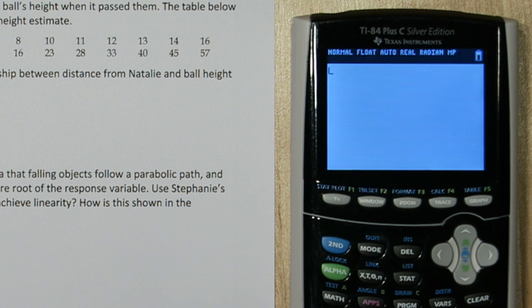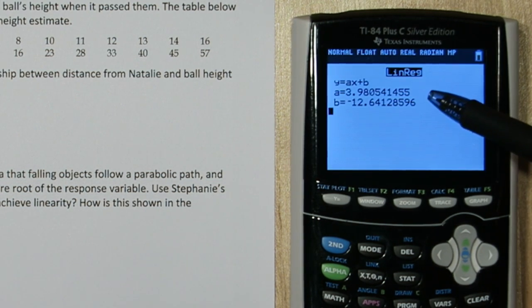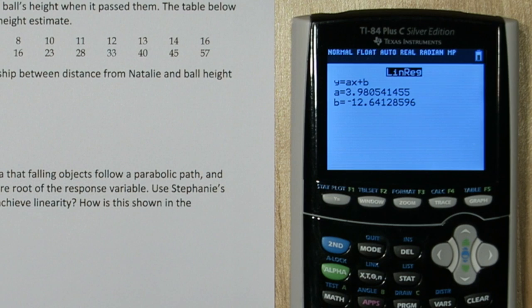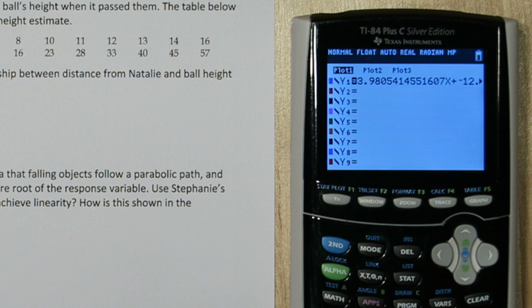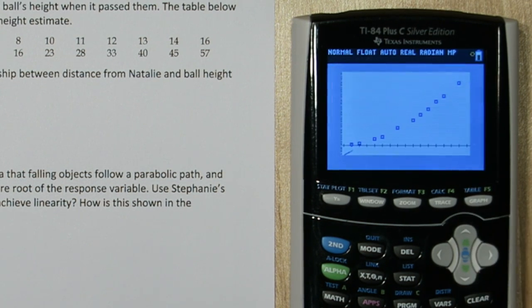Alright press enter on calculate. Here's our slope and here's our y-intercept. So now when I press y equals, you can see y1 is now our least squares regression equation. So if I press graph I can see how well a line fits the data. It looks like not very well.